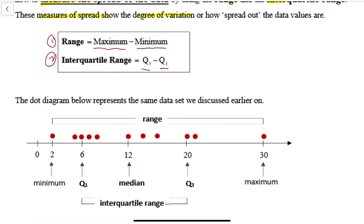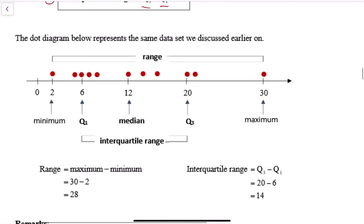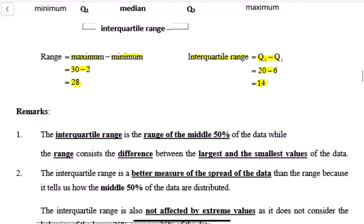There are two ways to look at spread: first using range, second using interquartile range. Using the same data as before, the range is maximum minus minimum — so I take 30 minus 2 and get a range of 28. The smallest number is 2, the biggest is 30. But for interquartile range I look at the third quartile minus the first quartile, which is 20 minus 6, giving 14. You see that the interquartile range is much smaller than the full range.